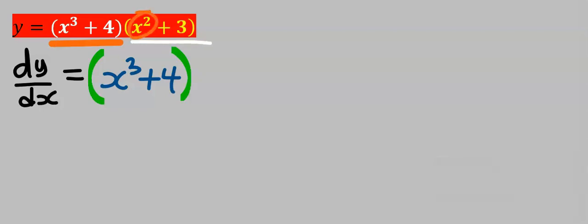If you differentiate x squared, you're going to get 2x, and if you differentiate 3, you're going to get zero. However, I'm going to leave the zero out.